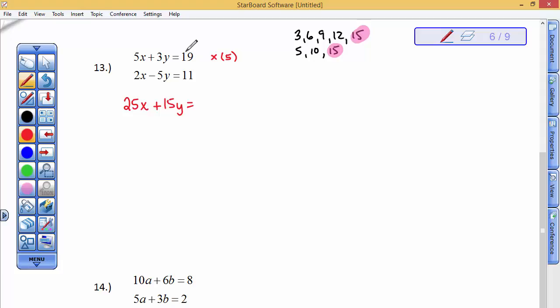Then, I'm going to multiply this equation by the number 3, so that this will become a minus 15. So, 2 times 3 is 6x. A minus 5 times 3 is a minus 15y. Notice those y's. Good. 11 times 3 is 33.